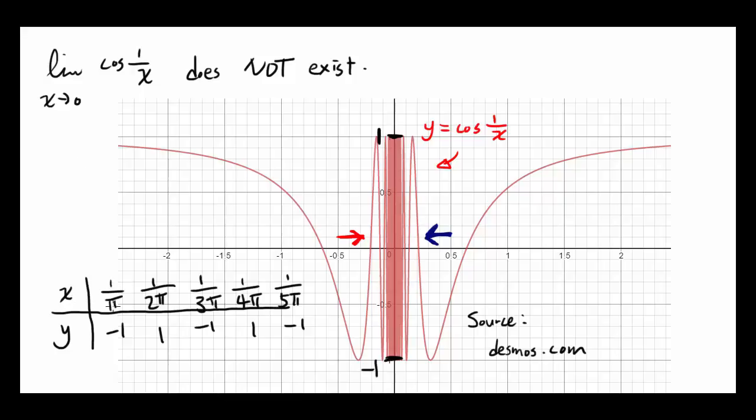When x is 1 over pi, y is going to be cosine of 1 over 1 over pi, or cosine of pi.